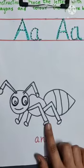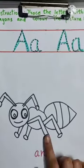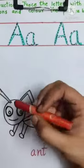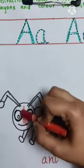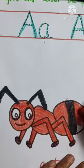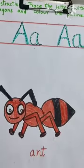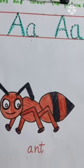A for ant. What is the name of this animal? Ant. I am going to take red color and color this ant. Now I have finished coloring the ant. Thank you.